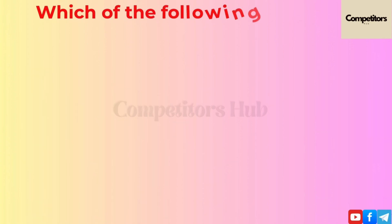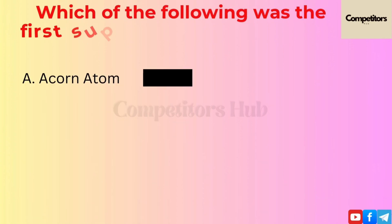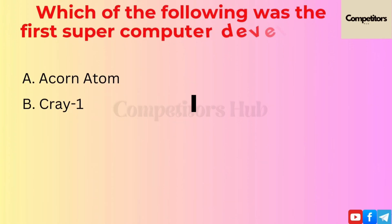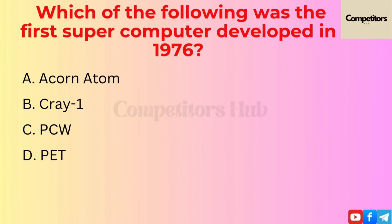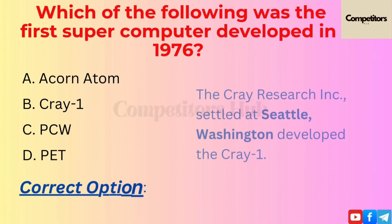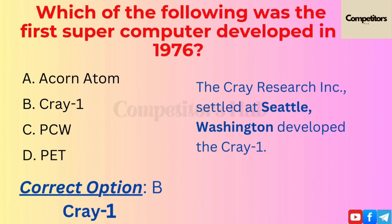The next question is: which of the following was the first supercomputer developed in 1976? Option A: Akron Atom. Option B: Cray 1. Option C: PCW. Option D: PET. The correct option is B, Cray 1.